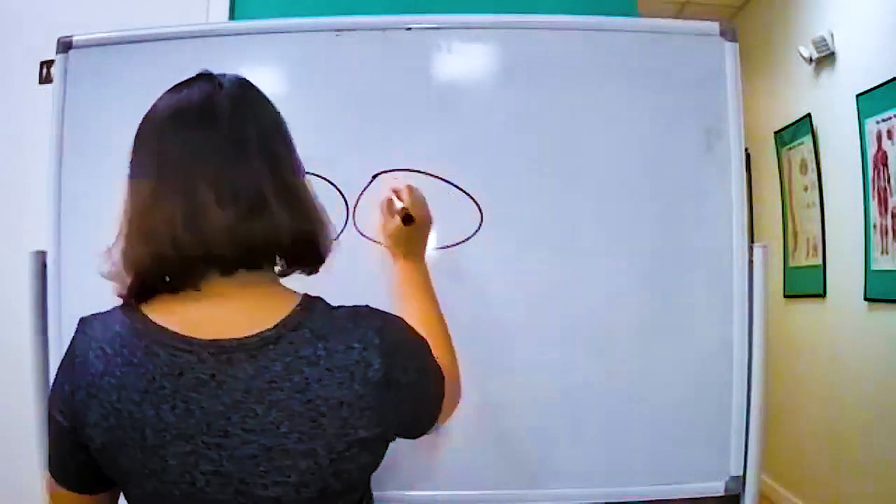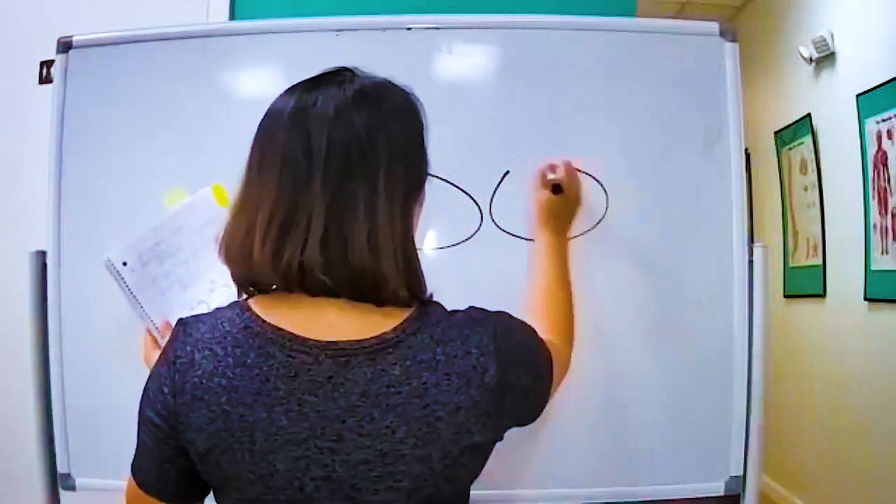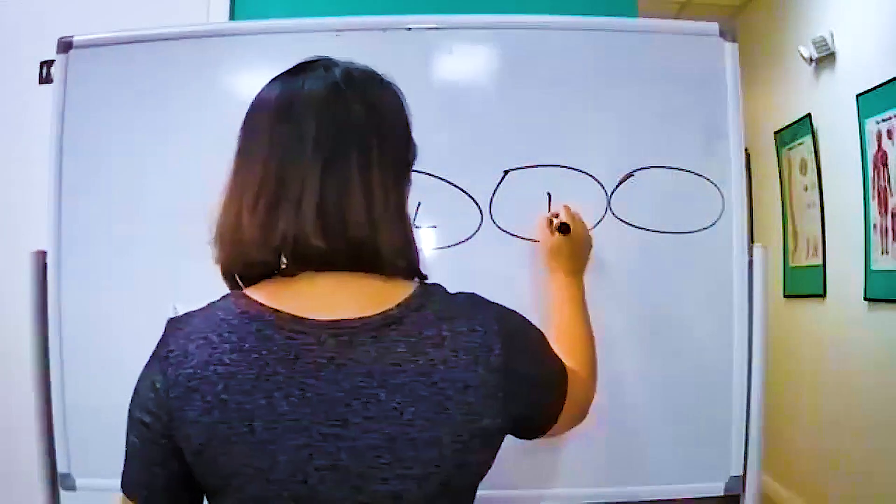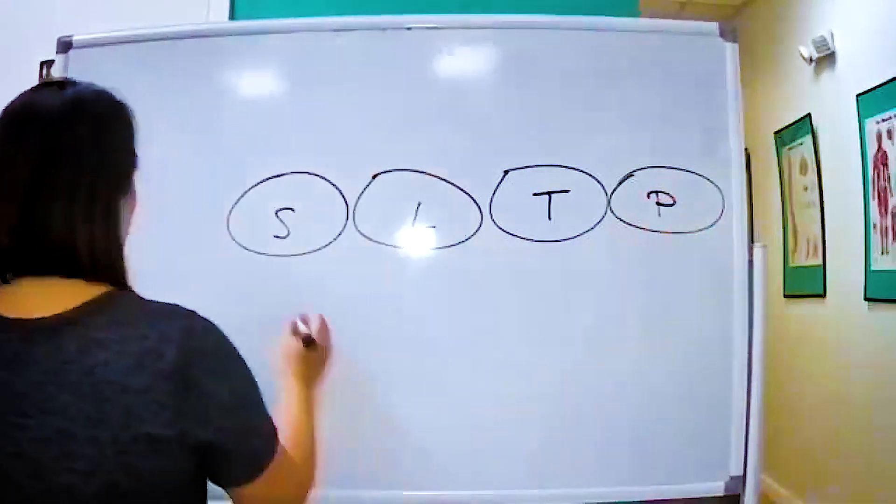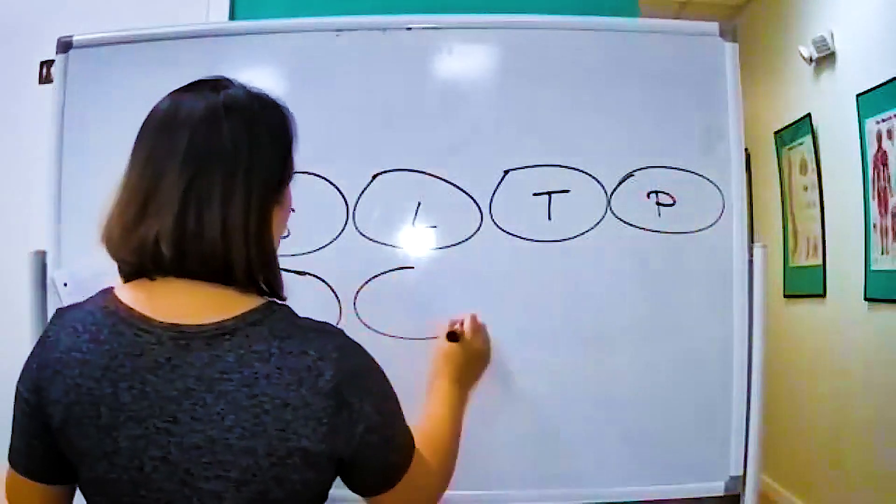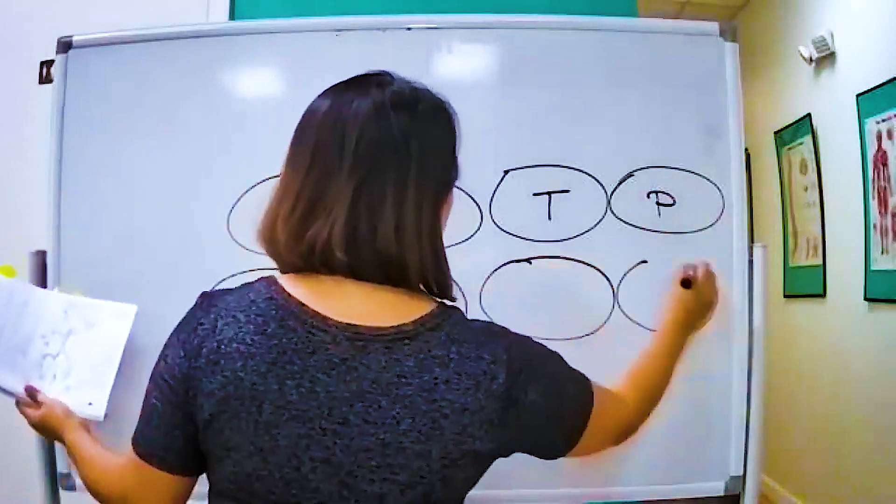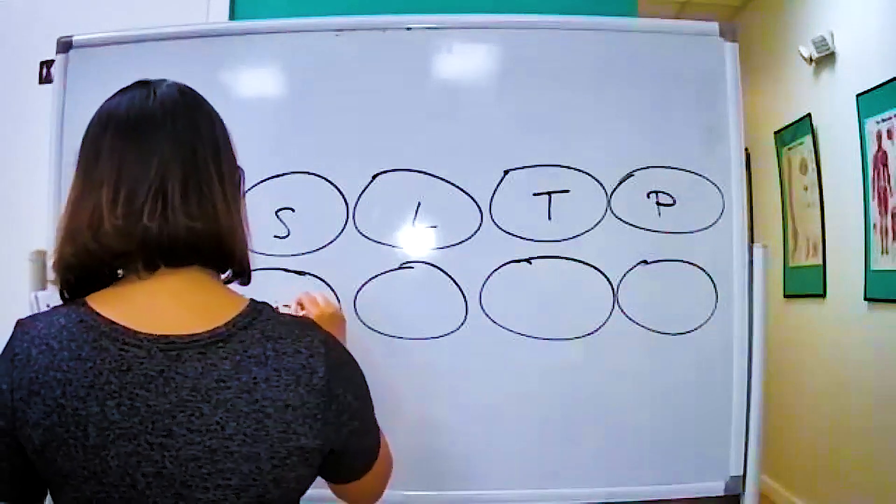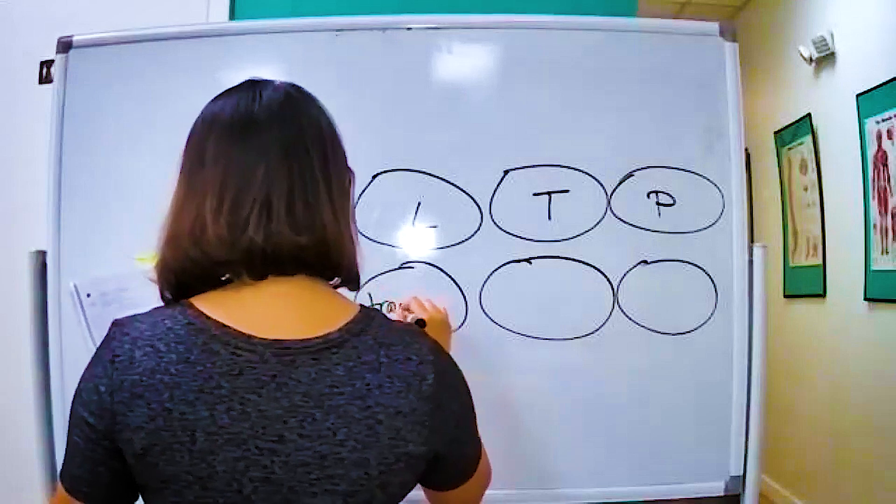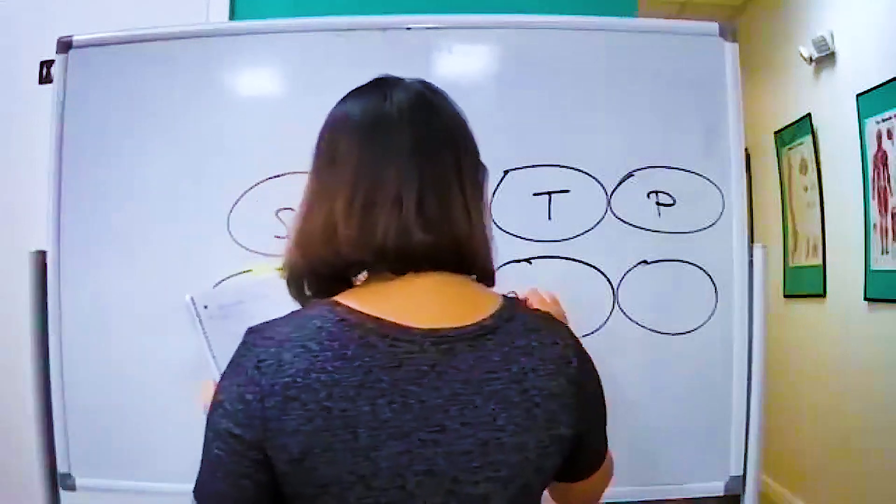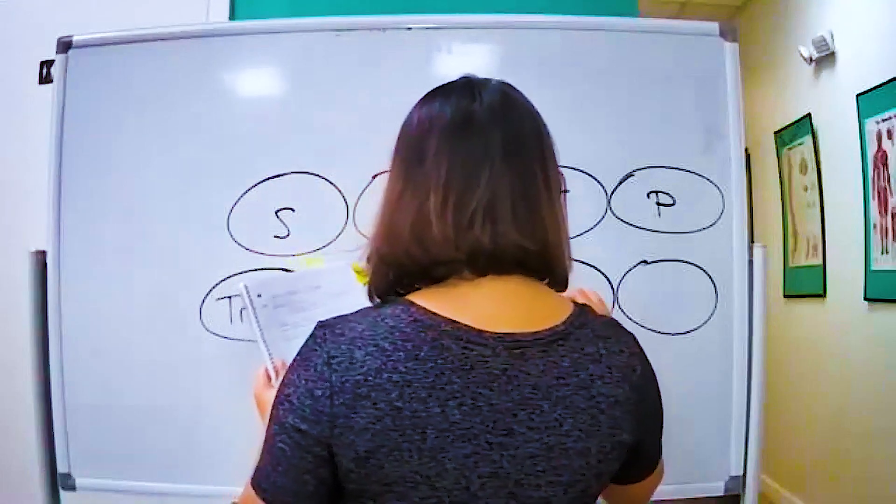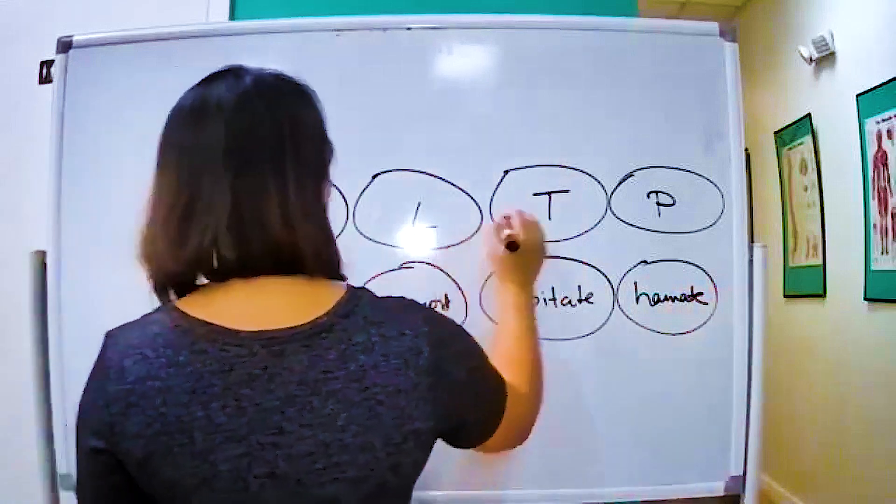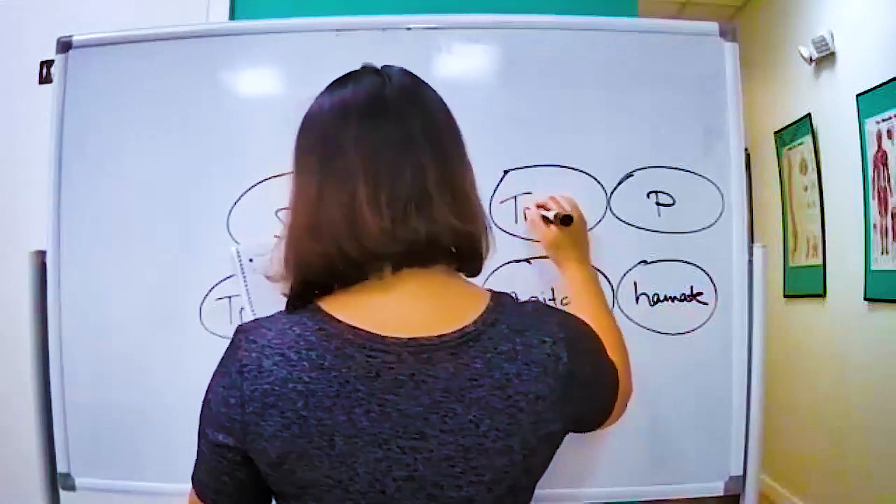I draw the scaphoid, the lunate, the triquetrum, and then the pisiform. So this is a scaphoid, the lunate, the triquetrum, and the pisiform. And then over here is going to be your trapezoid, I mean your trapezium, sorry. Trapezium, your trapezoid, and your capitate, and then your hamate, because all the T's are crucial.